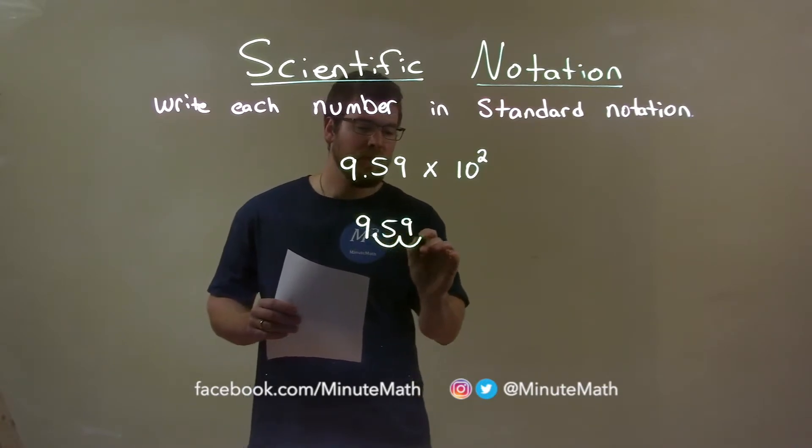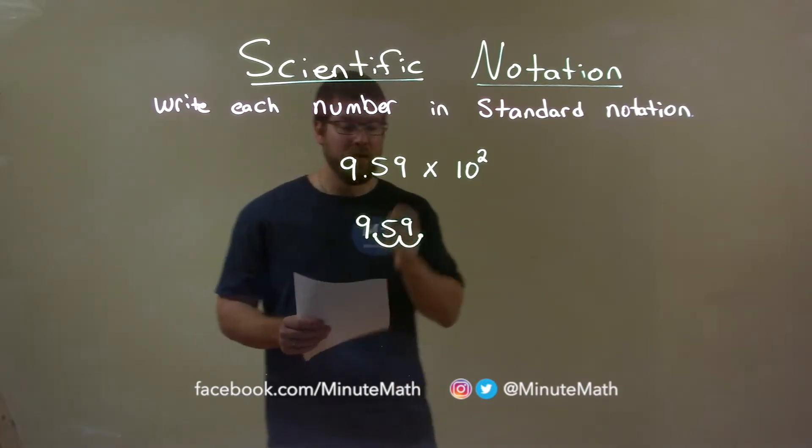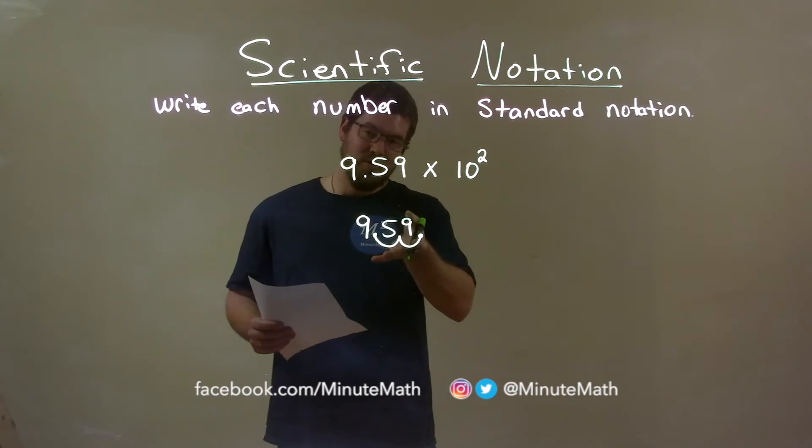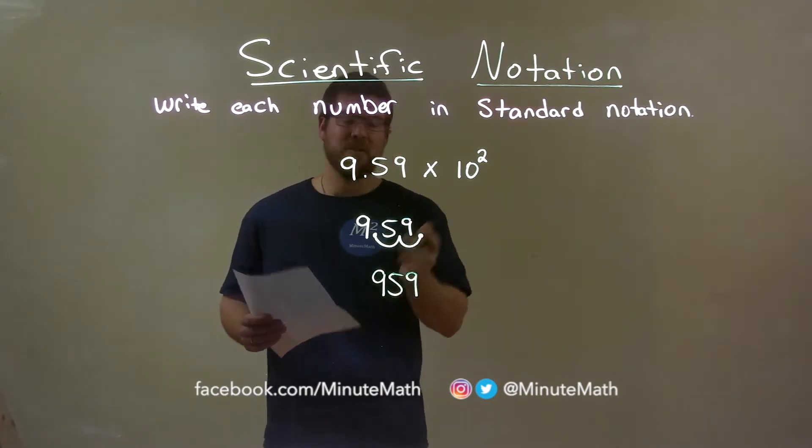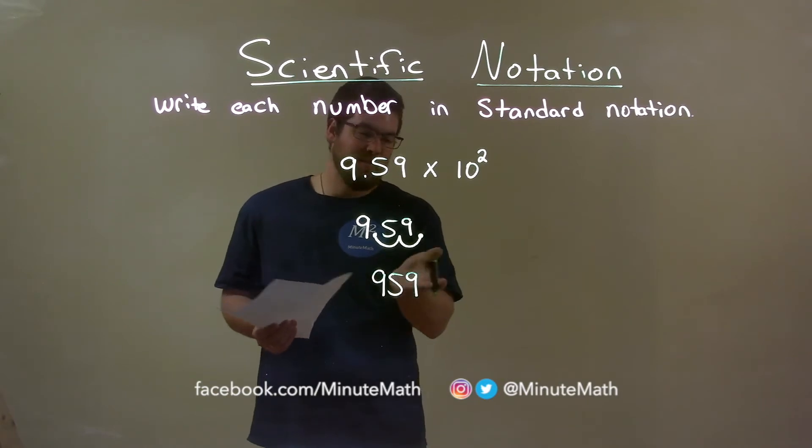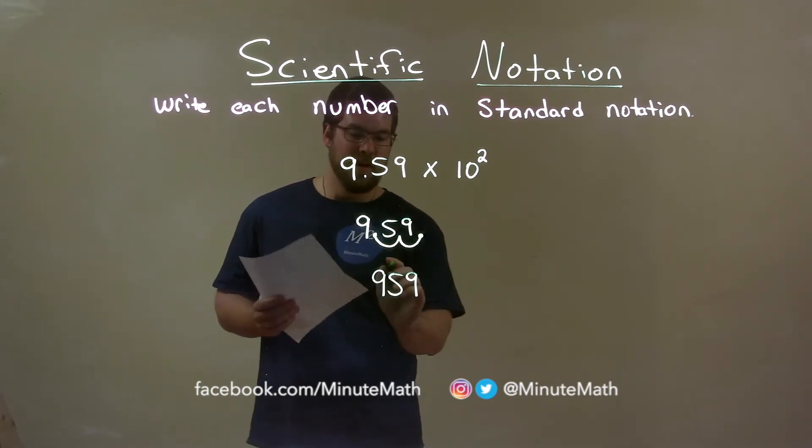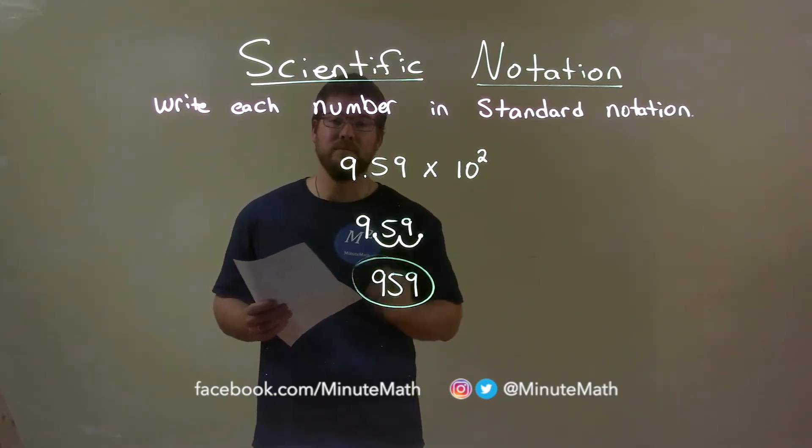So, we have one, two spots right there. Here's the new decimal place, and so let's go rewrite it. We have 9.59. We don't need the decimal place really there because there's nothing else afterwards, and so our final answer is 959.